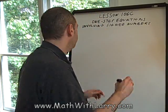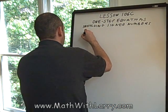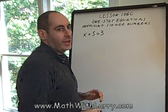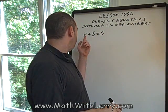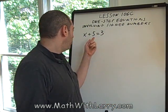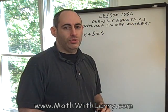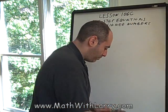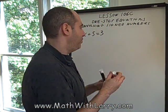For this first example, I'd like to do x plus 5 equals 3. Now, recall how we do this. We want to try to get x by itself, but we see that 5 is being added to it. We'll do the inverse operation, which is to subtract 5, and we'll do that on both sides of the equation.